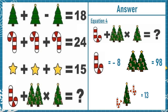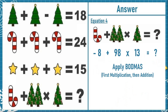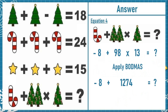Putting all these values into equation 4 we have minus 8 plus 98 times 13. Applying BODMAS — multiplication first, then addition — we get minus 8 plus 1274, which equals 1266. So the correct answer of this puzzle is 1266.